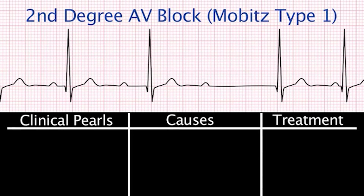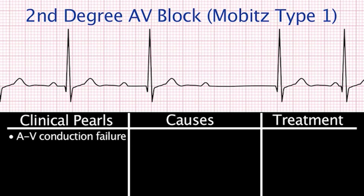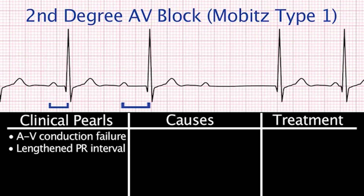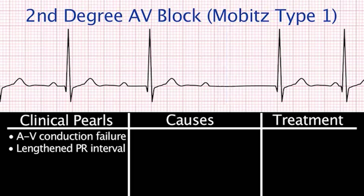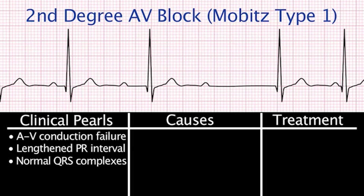Second-degree AV block, or Mobitz type 1, occurs when there is an intermittent failure of conduction between the atrium and ventricle. There is a progressive lengthening of the PR interval until one QRS complex is dropped completely. This PR interval lengthening occurs over three to six cycles until the QRS complex is dropped. All QRS complexes are normal in configuration.